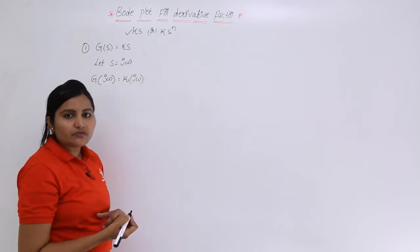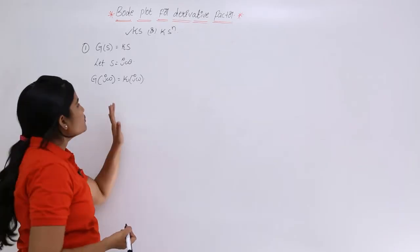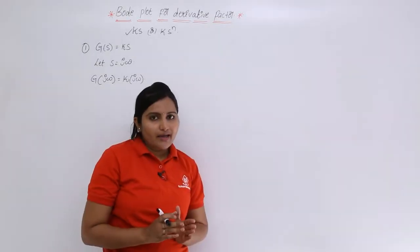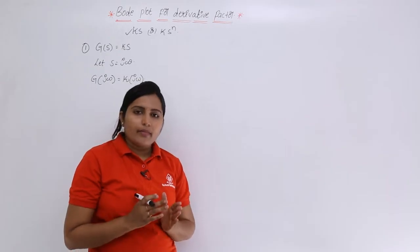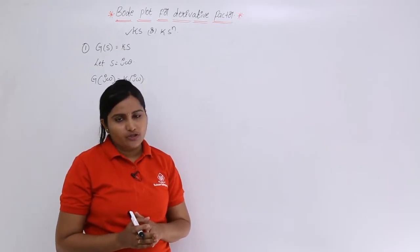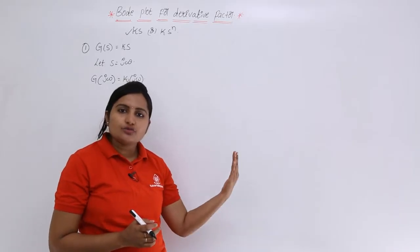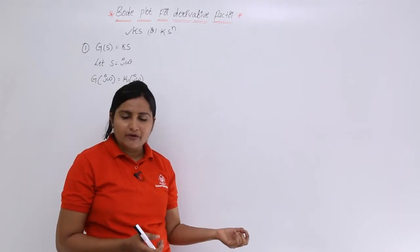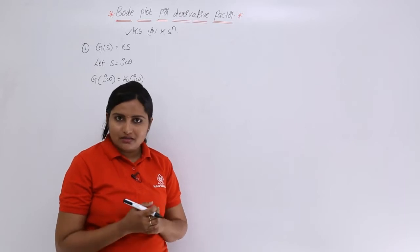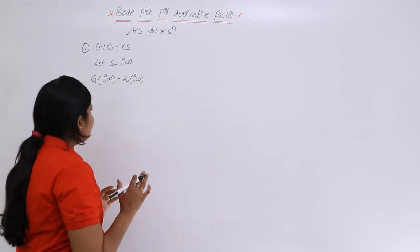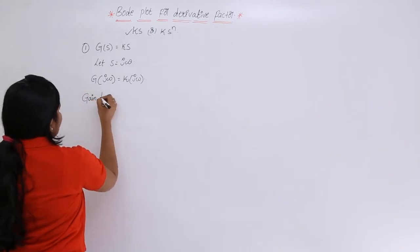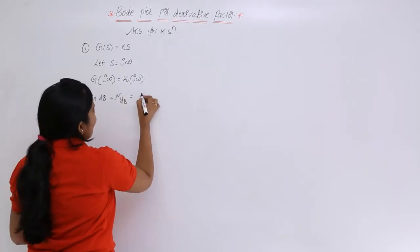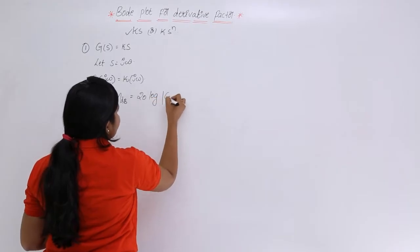This is the open loop transfer function — the derivative term. The first step is to find magnitude, then phase, because to draw any Bode plot we require both a magnitude plot and a phase plot. To draw the magnitude plot, we require gain in dB. The formula for that is 20 log of the modulus of G(jω).